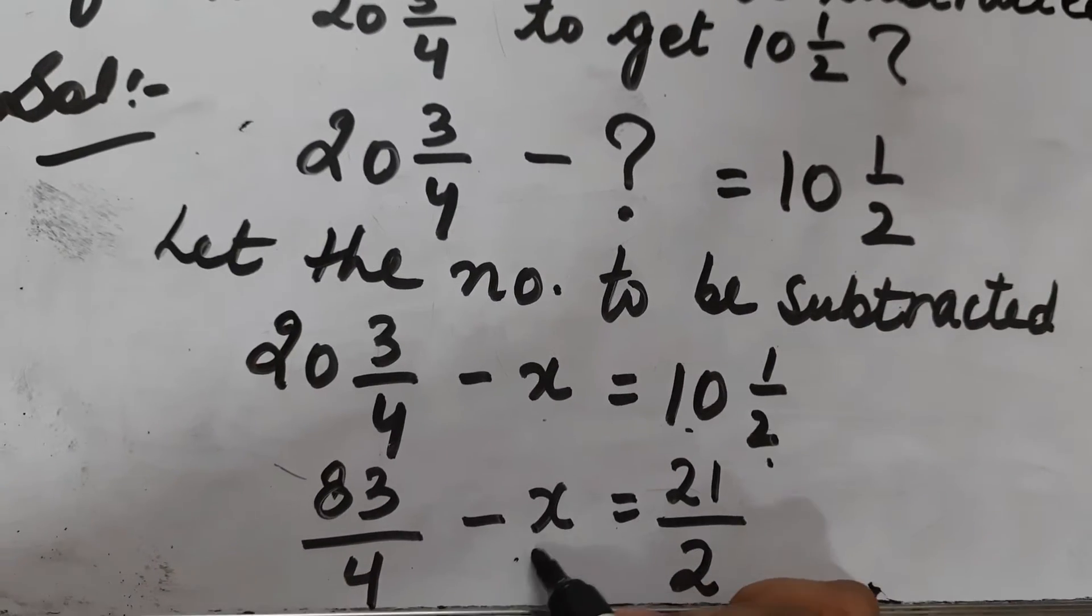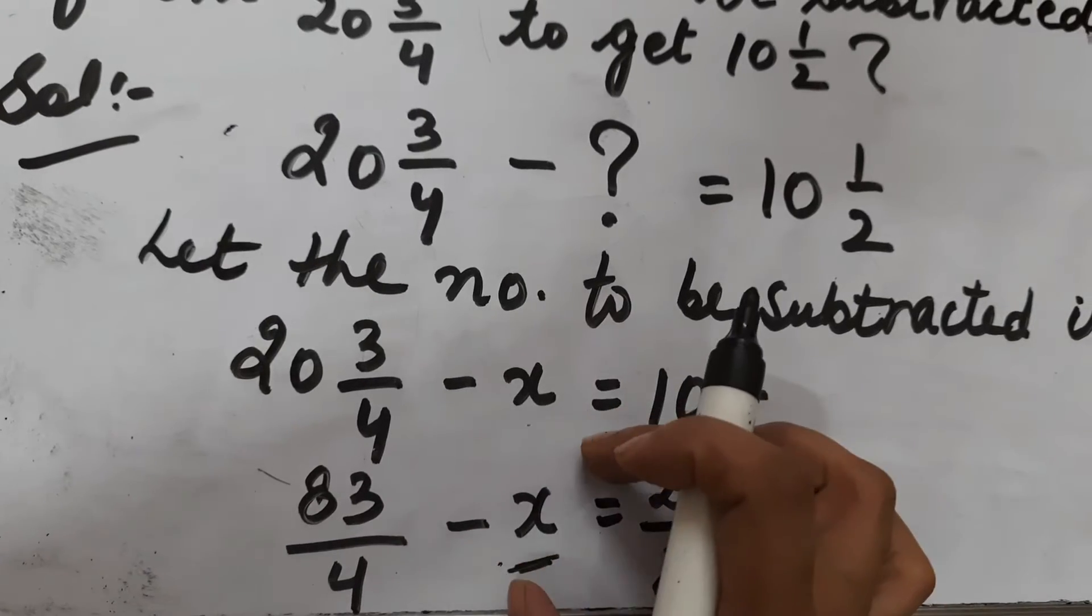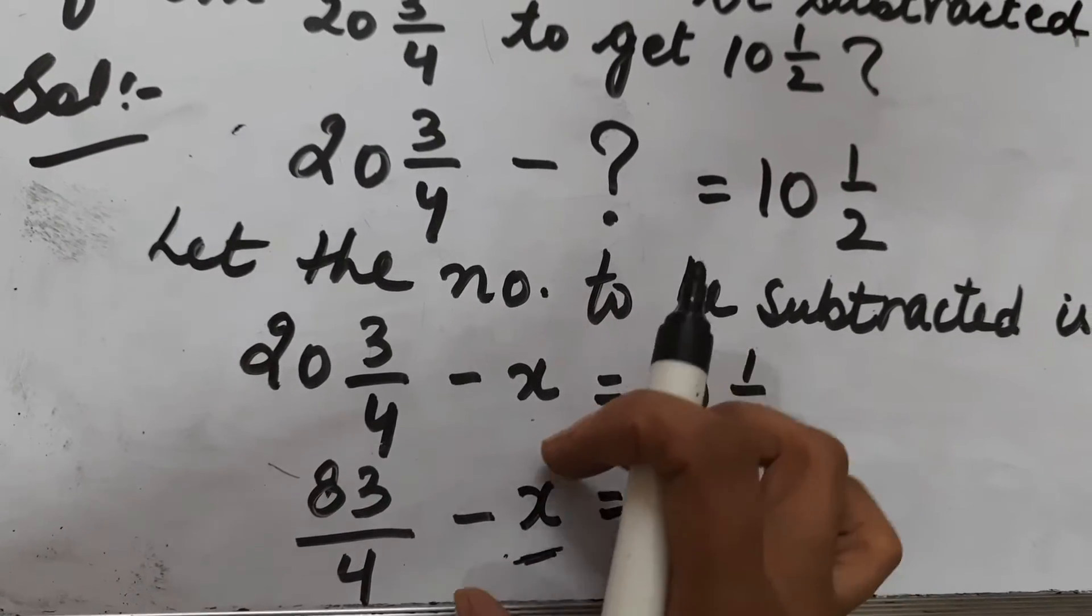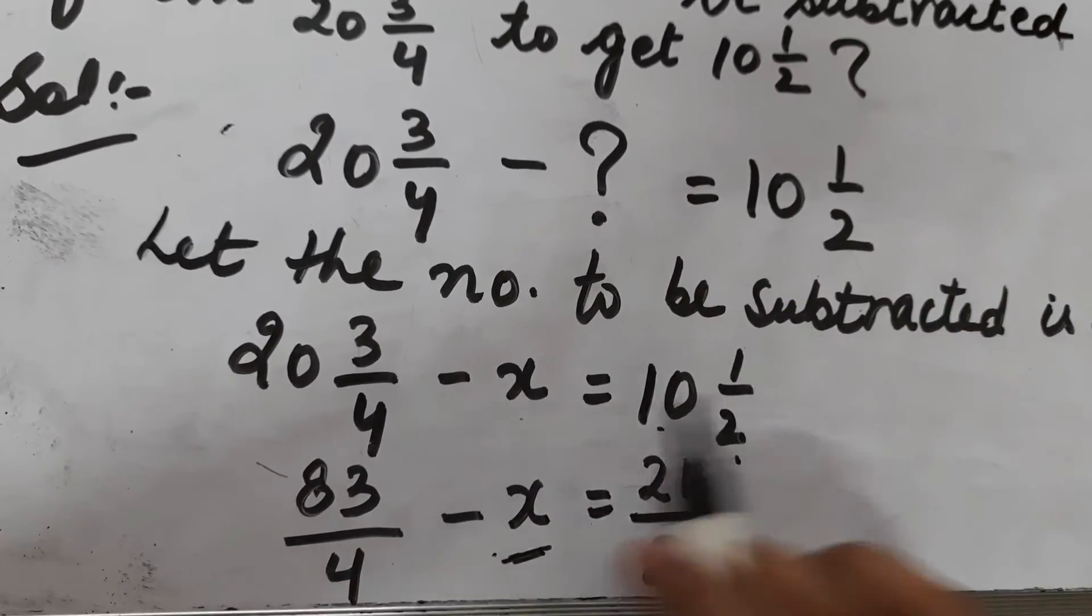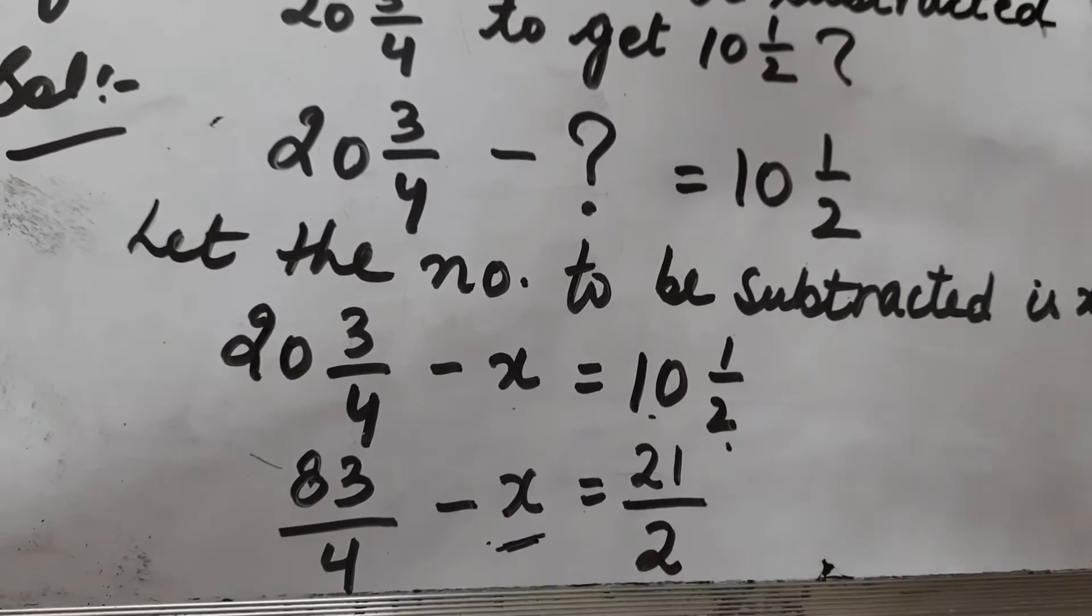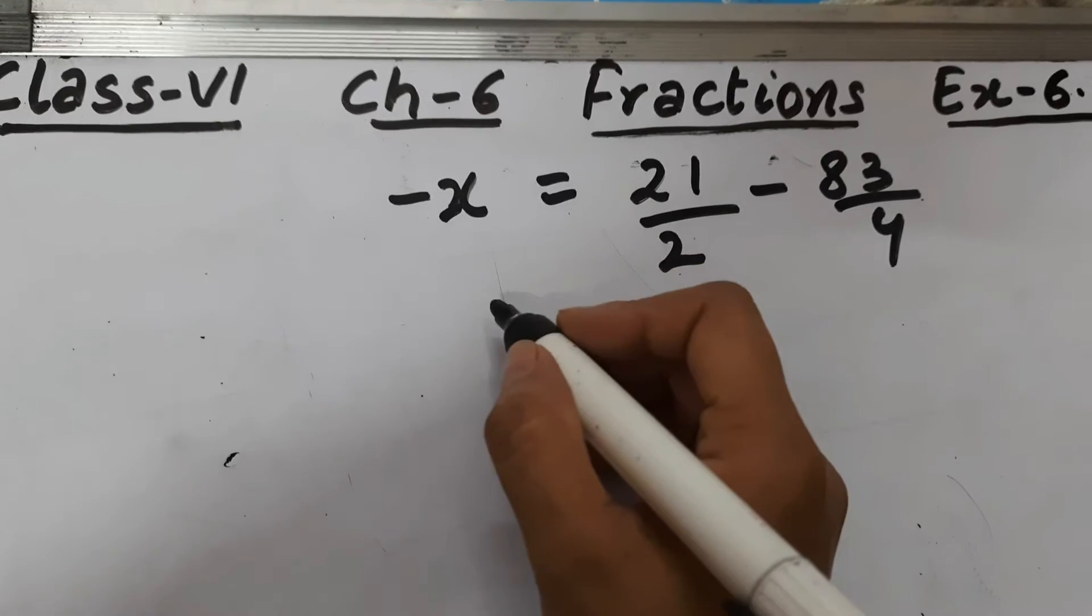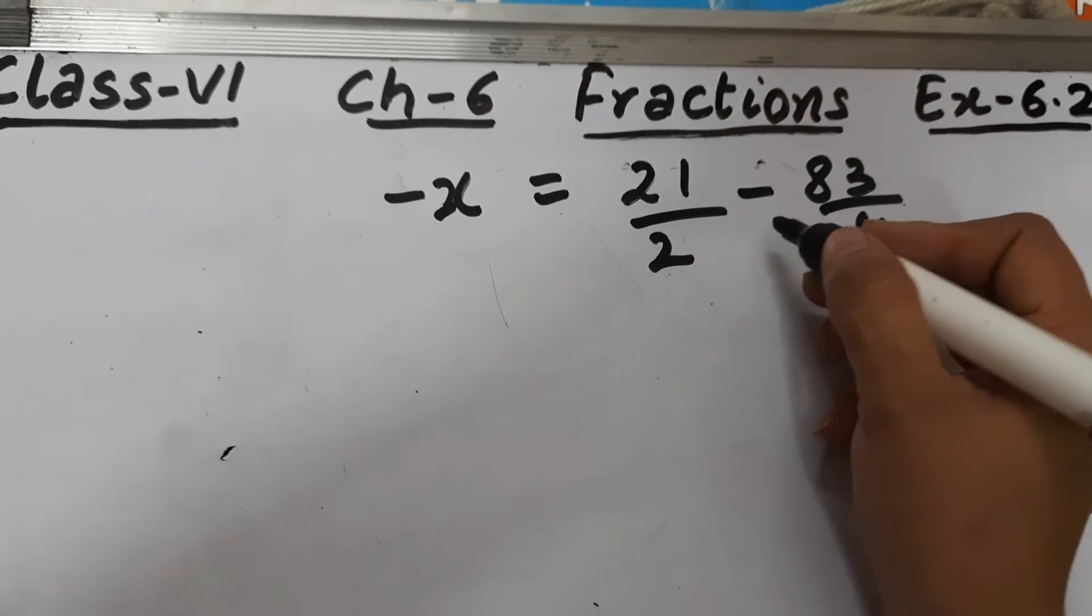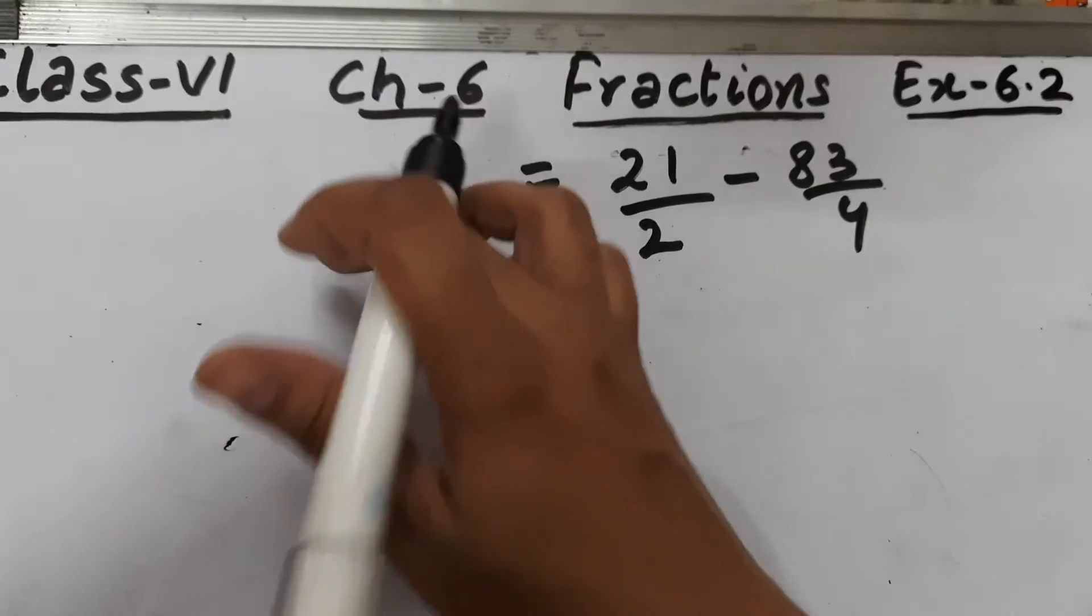Now we have to find the value of this x. Whatever is along with x we take it to the other side of equal to. So this 83/4 will move to the right hand side. So minus x is equal to 21/2 minus 83/4.